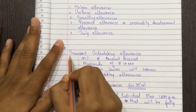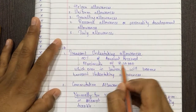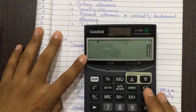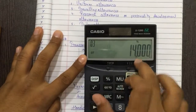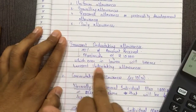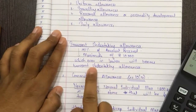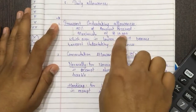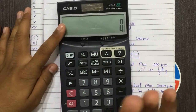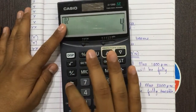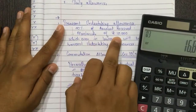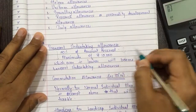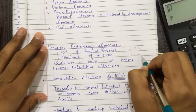For transport undertaking allowances, take an example: if the allowance provided is ₹24,000, then 70% comes to ₹16,800, or the maximum of ₹10,000 — whichever is lower. So ₹10,000 will be the exempt amount. The balance (₹24,000 − ₹10,000 = ₹14,000) will be taxable.